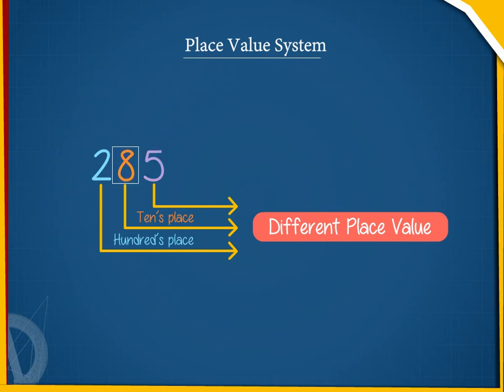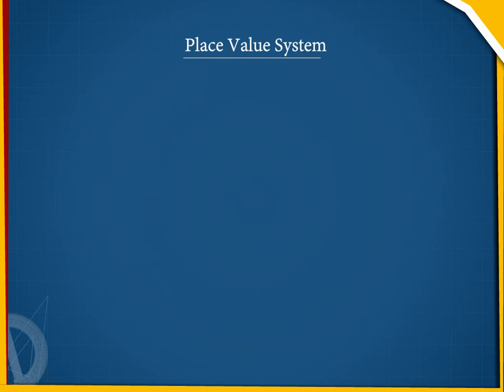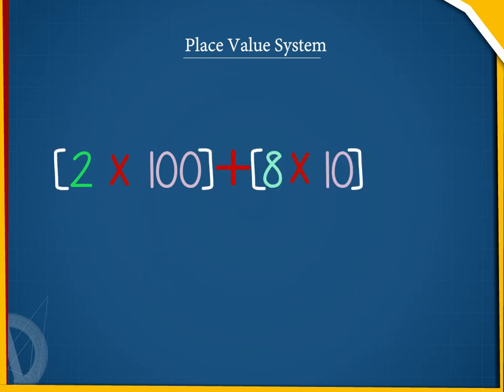The last or the rightmost digit is in the ones place, which is 5 here. Therefore, there are 2 sets of 100 plus 8 sets of 10 plus 5 ones in the number 285.